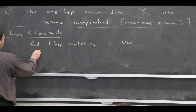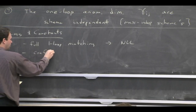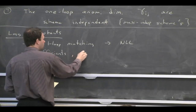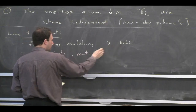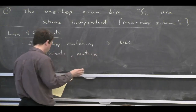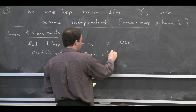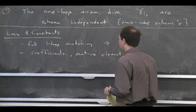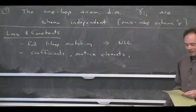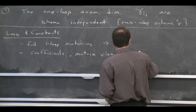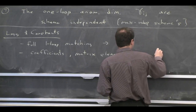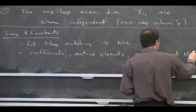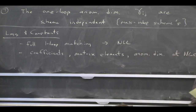What I want to focus on is the scheme dependence, because the coefficients, once you get to the next leading log, are totally scheme dependent. You can ask: what physical sense do they make if they're scheme dependent? Well, it turns out that the matrix elements are also scheme dependent, and the anomalous dimensions are scheme dependent. So basically everything is scheme dependent. But when we put it all together, we get a scheme-independent result.